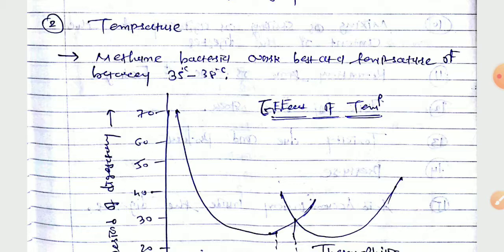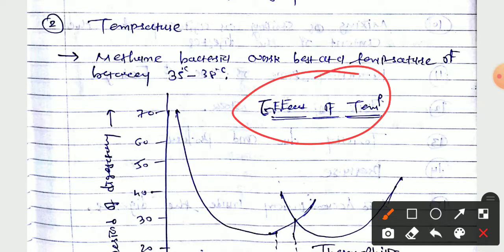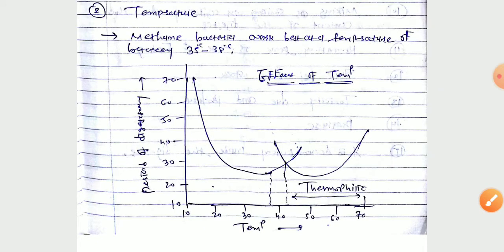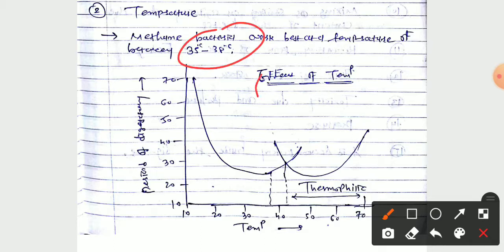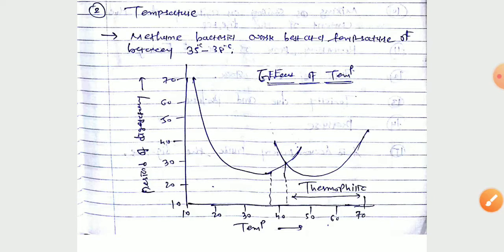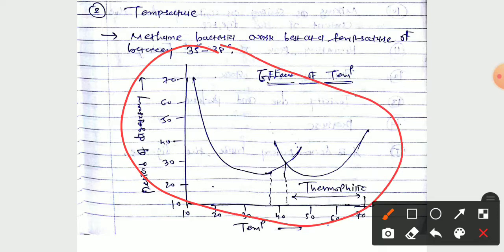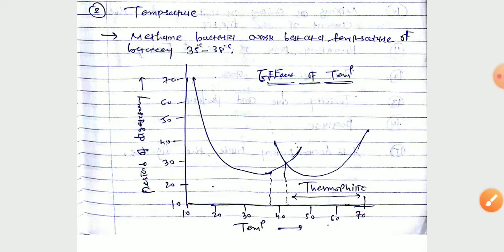The second main factor is temperature. Methane bacteria work best at a temperature of between 30 to 35 degrees Celsius. This is the mesophilic range. For the thermophilic range, the temperature is between 45 to 70 degrees Celsius, which affects the period of digestion.